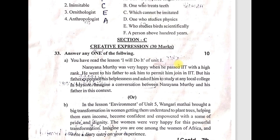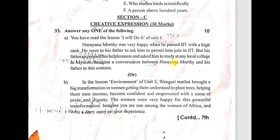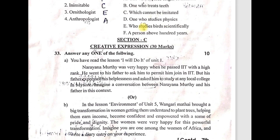These are the creative expressions in Section C. Questions 34 and 35 are also worth ten marks each. Section C is also a scoring area — students should put in 100% effort. Section A has 30 marks, Section B has 40 marks, and Section C has 30 marks. You can score easily. Wish you all the best and good luck.